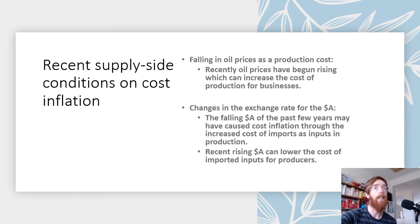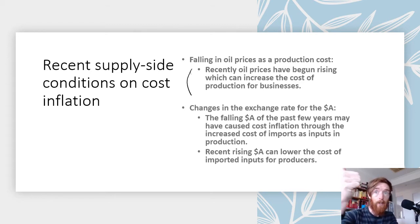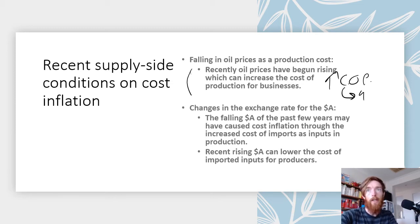Looking at some recent supply side conditions: first, oil prices. Recently oil prices have been rising, which increases the cost of production for businesses — either through using oil as an input in production or through transportation costs. So that's going to increase the cost of production, which leads to increased cost inflation.